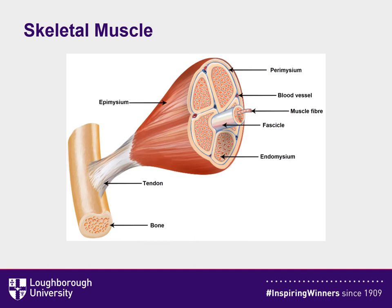Another typical example of biological tissue is skeletal muscle, which also exhibits a complex hierarchical structure. It is supported by and attached to bone via a tendon made of collagen. These materials will also be covered in this presentation.